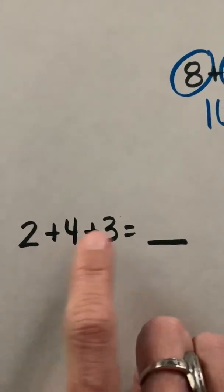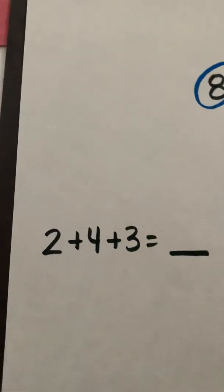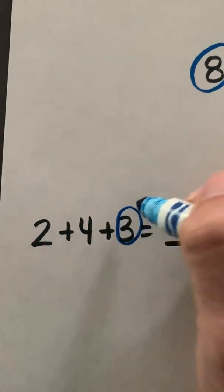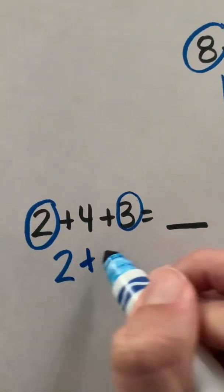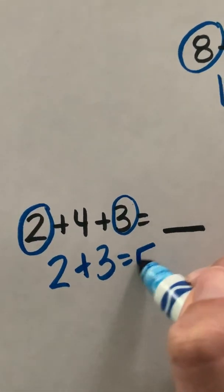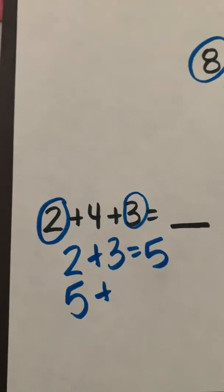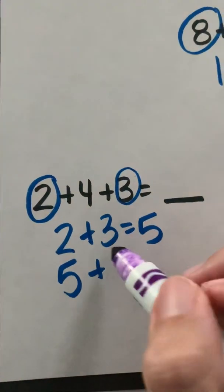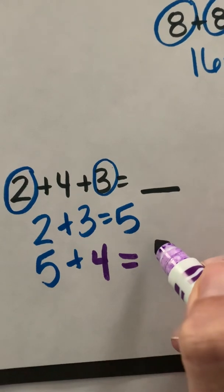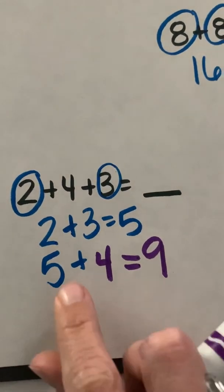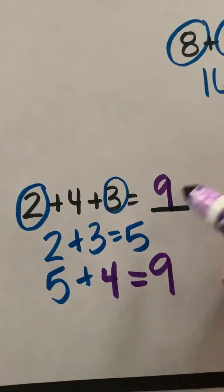I don't see any doubles, but what I do see is another combination. I know that 3 plus 2 is 5. So I want to add 2 plus 3 is 5 first, and then I want to add on my 4. And 5 plus 4 I know gives me 9. 5, 6, 7, 8, 9. 2 plus 4 plus 3 is 9.